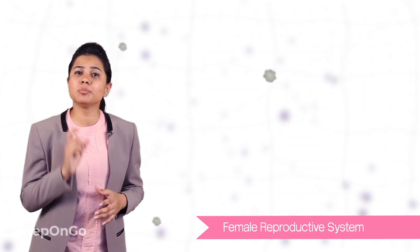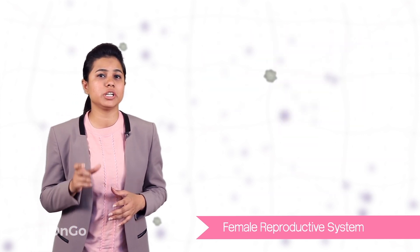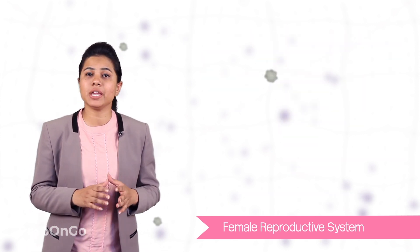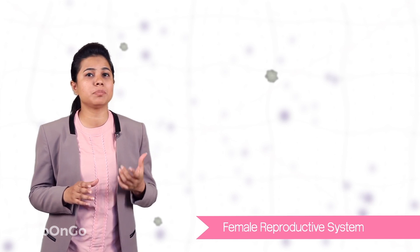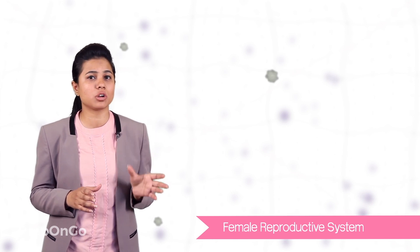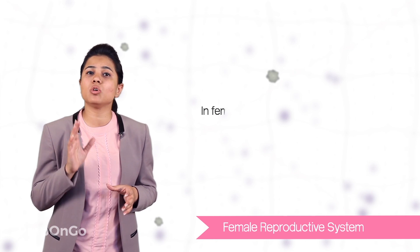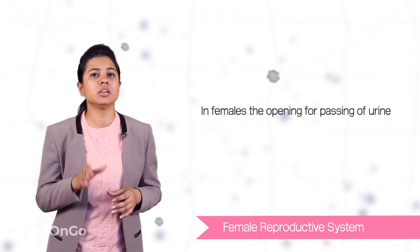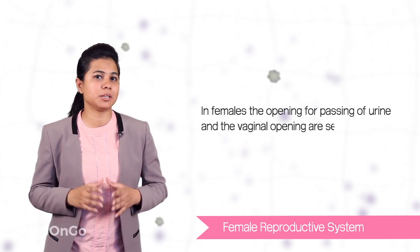One more important point to be noted here is that unlike males where they have the common passage for the urine and the sperm, in females the openings for passing out urine and the vaginal openings are separate.